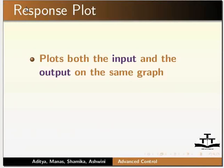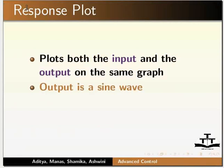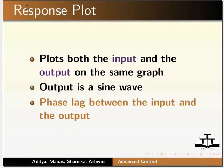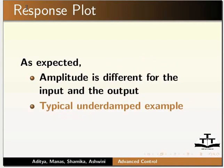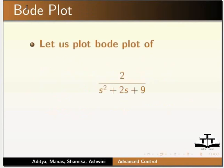This plot shows the response of the system to a step input and sine input — it is called the response plot. Response plots both the input and the output on the same graph. As expected, the output is also a sine wave and there is a phase lag between the input and output. Amplitude is different for the input and the output as it is being passed through a transfer function. This is a typical under-damped example. Let us plot the Bode plot of 2 / (s² + 2s + 9).